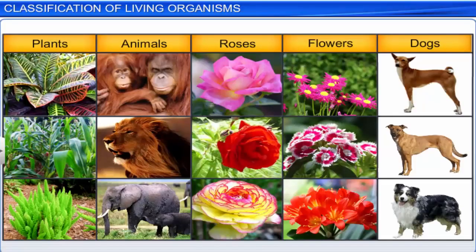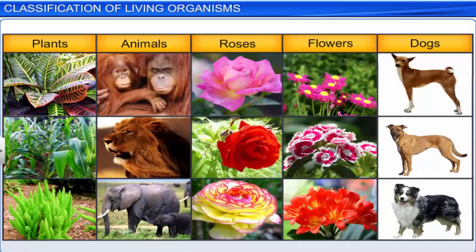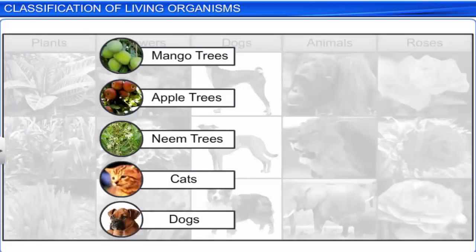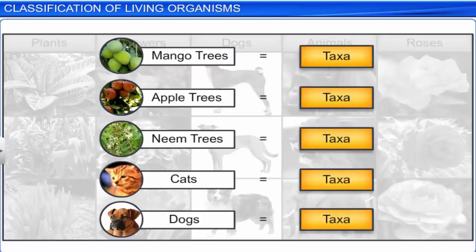For example, plants, animals, roses, flowers, and dogs are groups that we can easily recognize. Each group has specific characteristics and are convenient categories that help us to study organisms. The scientific term given for these categories is taxa.